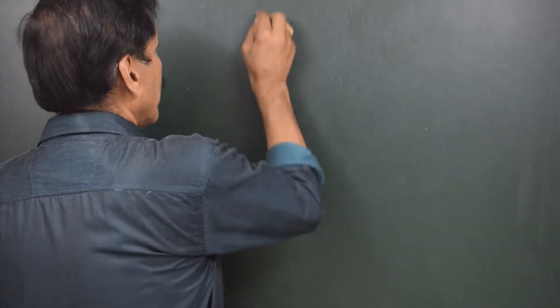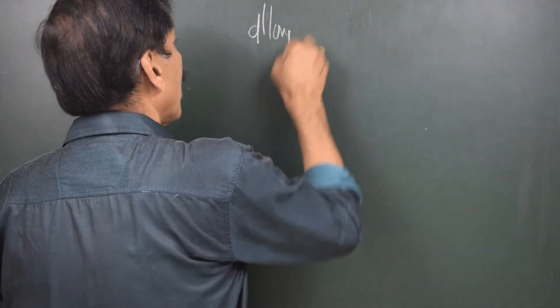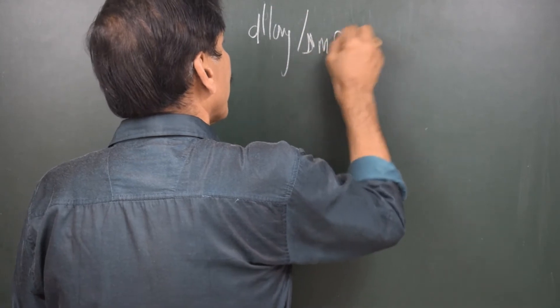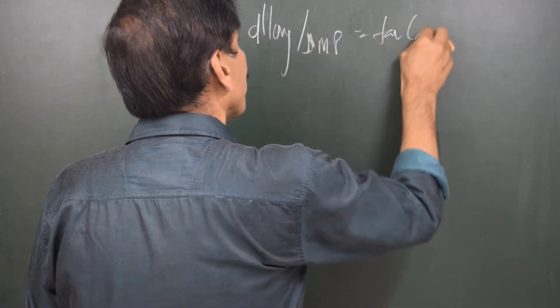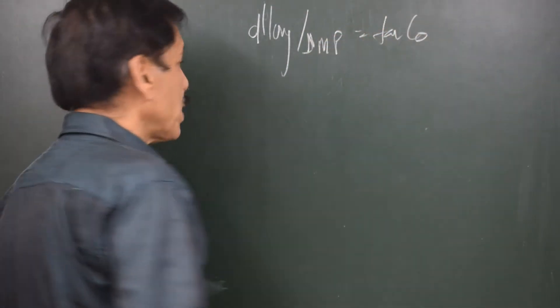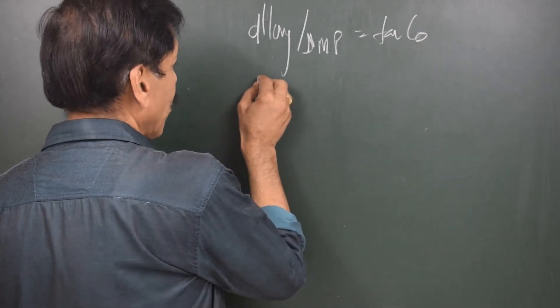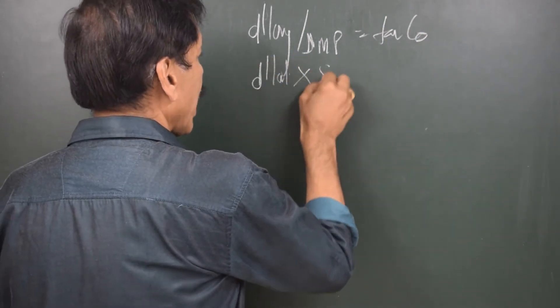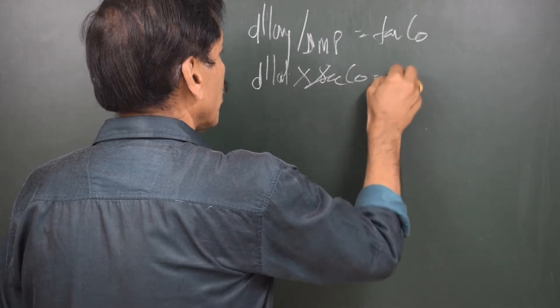The formulae used in Mercator Sailing are only two. You do not use any third formula. Formula number one: D long upon DMP is equal to tan course. Formula number two is the same as the plane sailing formula: D lat into sec course is equal to distance.